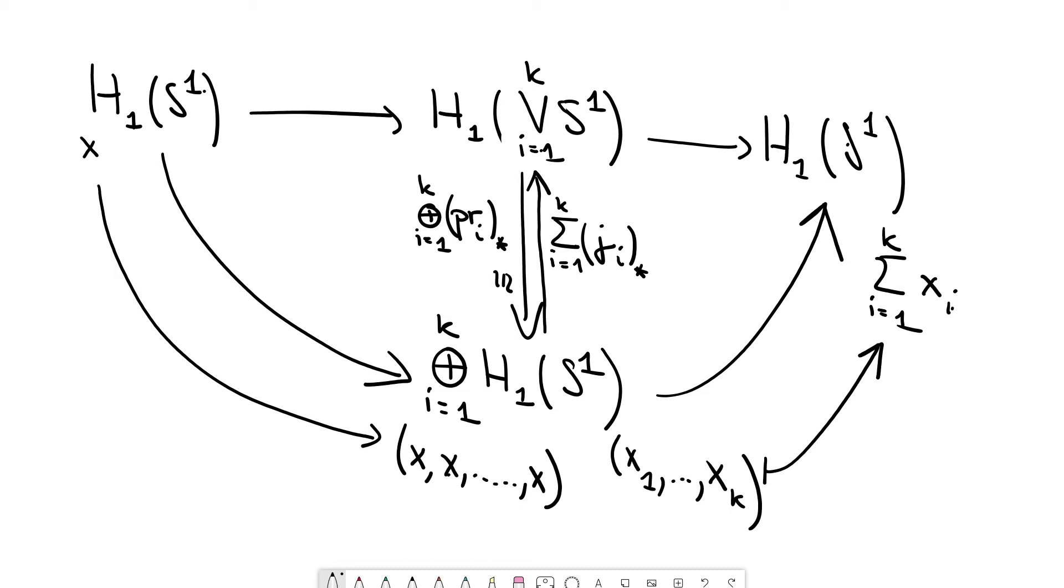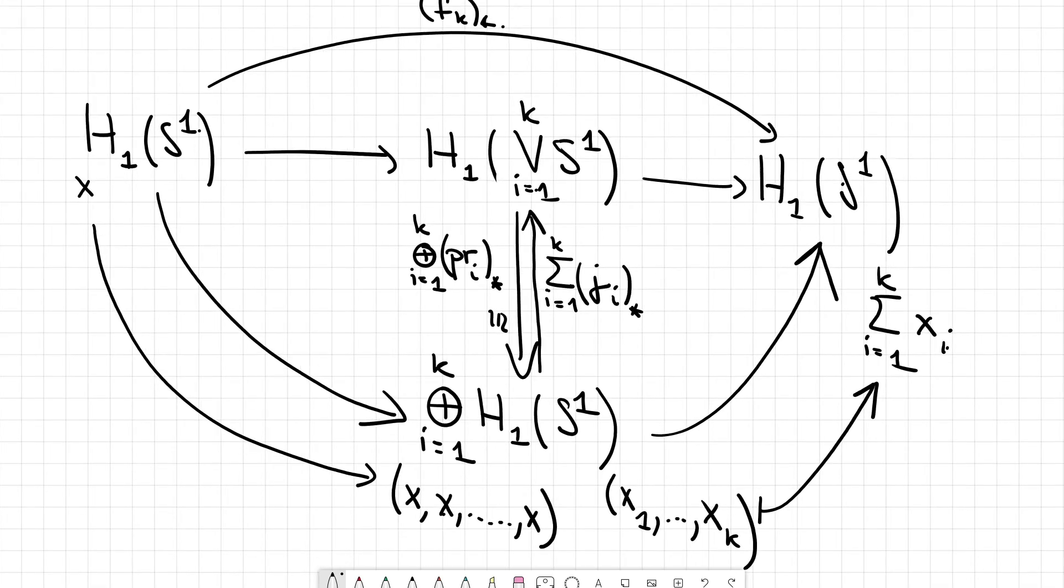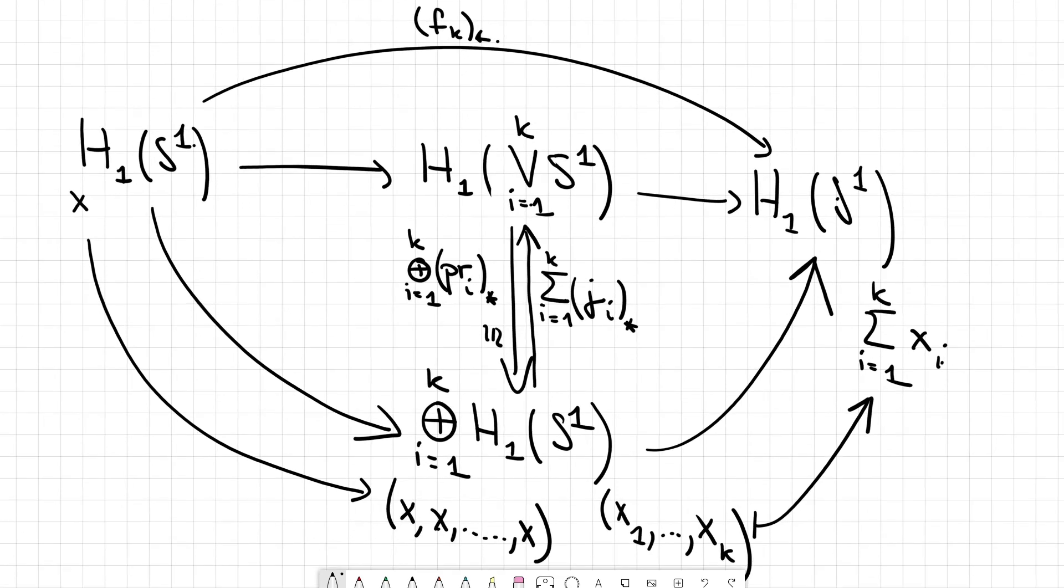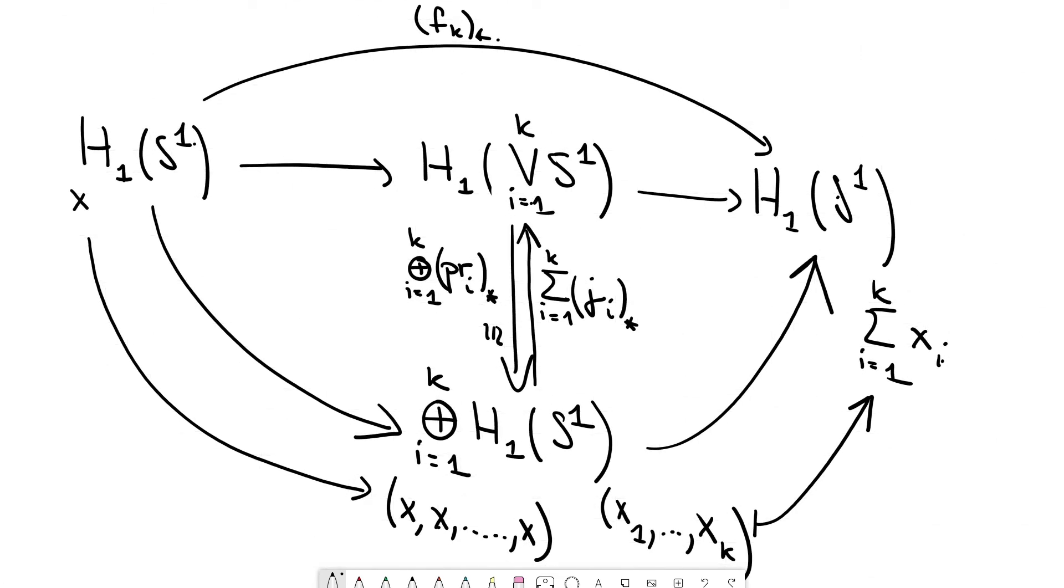If you now look at the composition of this map, and the composition, again, is just the induced map by f_k. So if you look at the composition, then you go from x to the vector (x, x, ..., x). And then this is mapped to the sum. So x really is mapped to k times x. And this is the statement I wanted to prove.